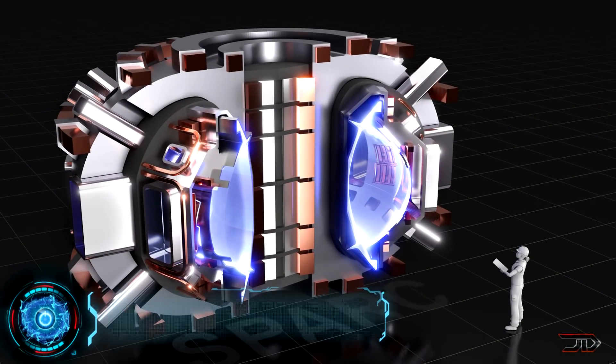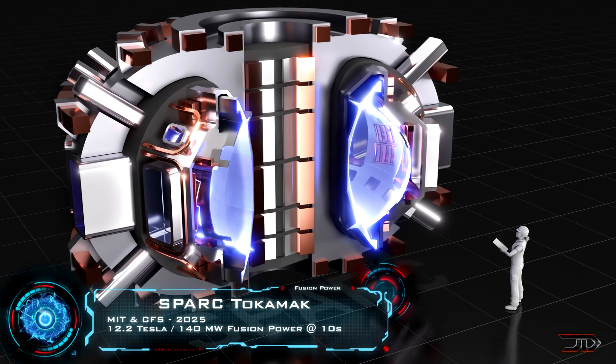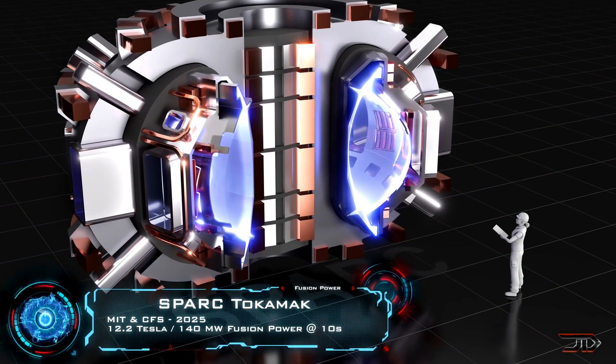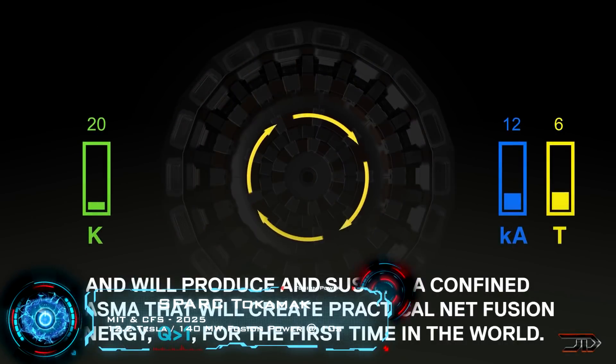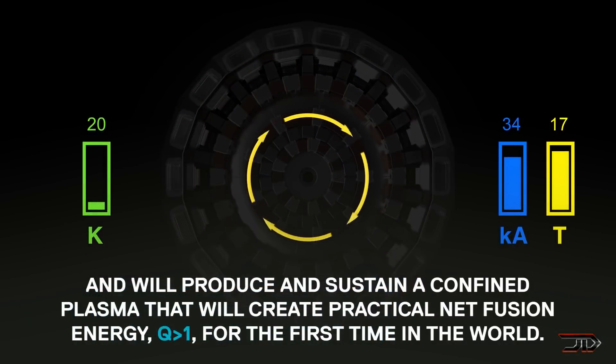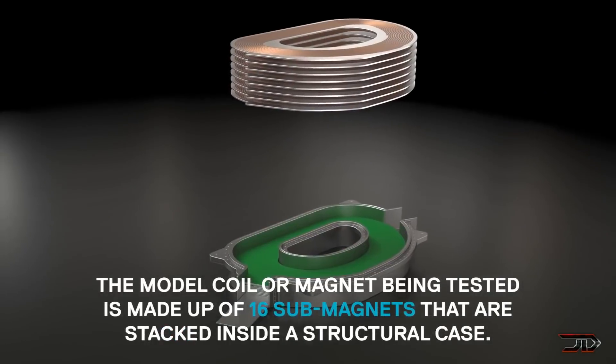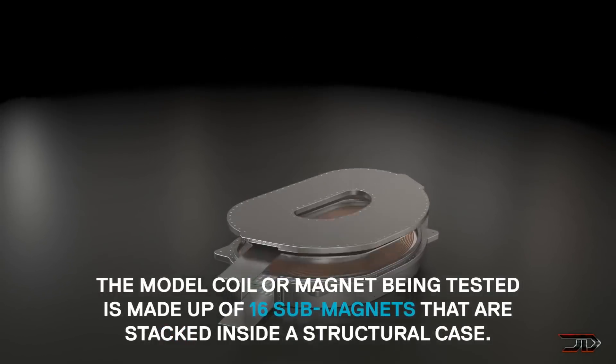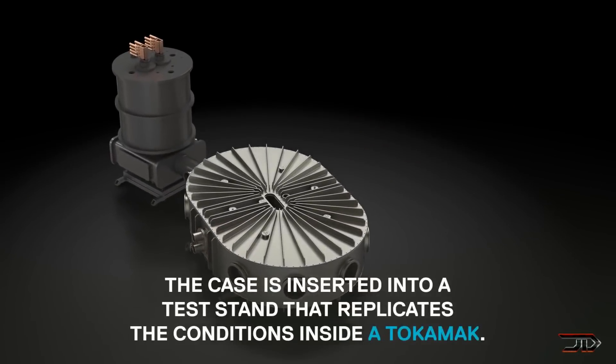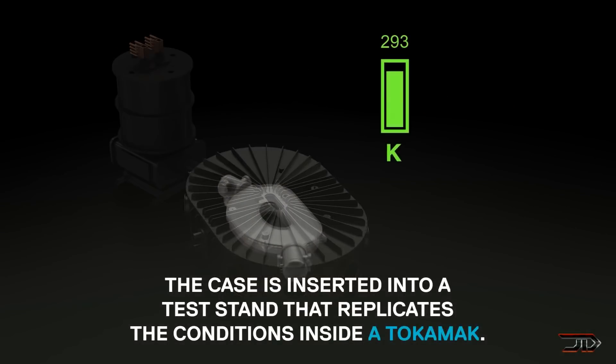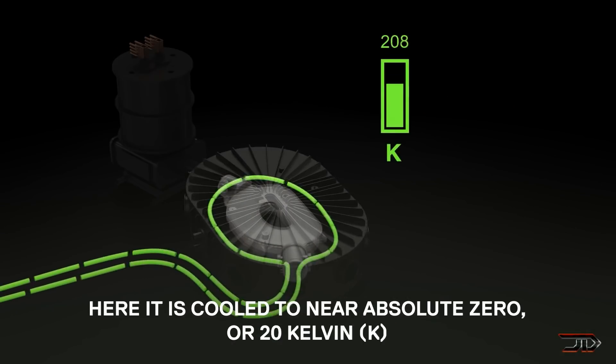One notable development is the SPARK reactor from MIT and Commonwealth Fusion System. They have recently revealed a very compelling high powered system. Once again this is a tokamak design, but its most intriguing feature is its high temperature superconducting electromagnet. These are very powerful individual units, with a recent demo releasing 20 Tesla, making it to be one of the most powerful magnetic fields created on earth artificially.